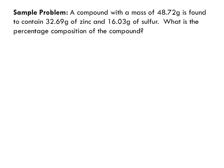Let's look at the first sample problem. A compound with a mass of 48.72 grams is made up of zinc and sulfur. 32.69 grams of it is zinc, 16.03 grams of it is sulfur. What is the percentage composition of this compound?